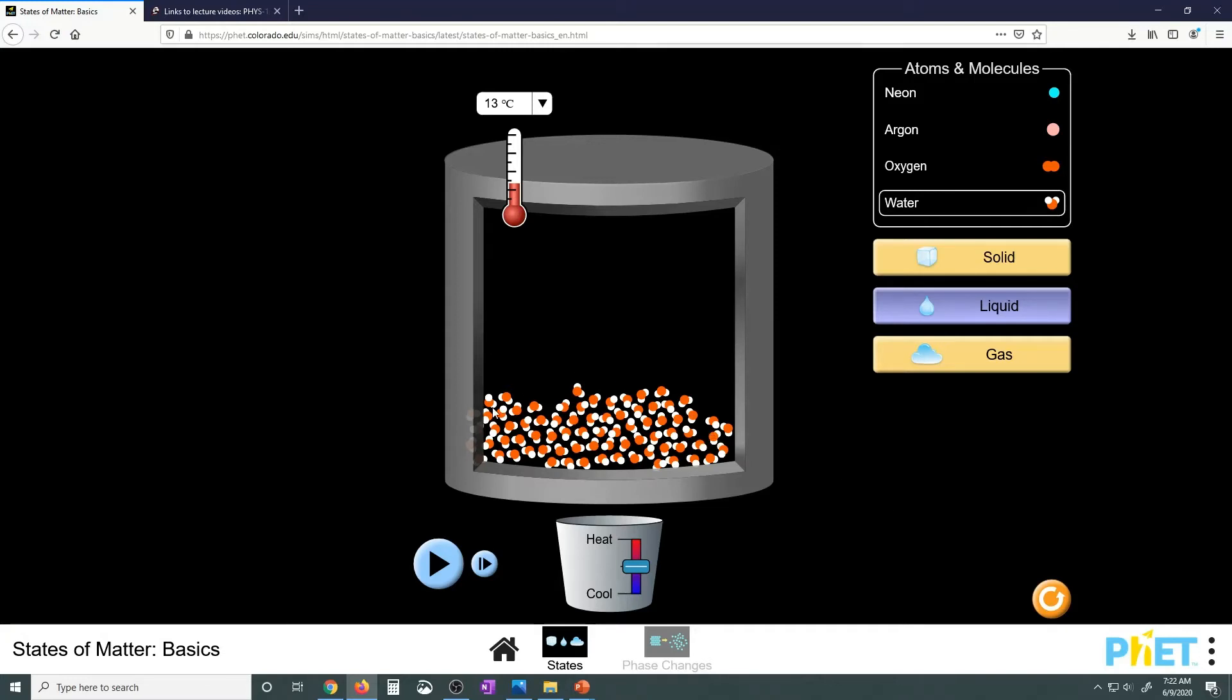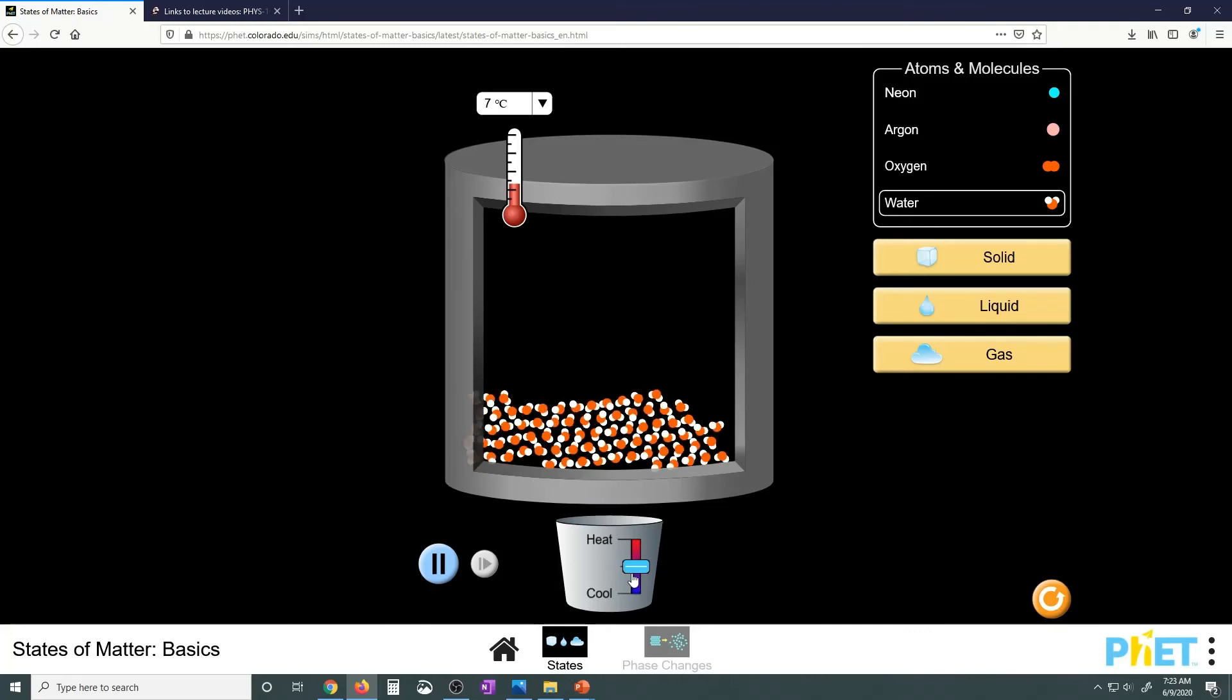This is the same simulation I showed you in video one, where I was trying to represent temperature as the average kinetic energy of the molecules. I'm looking at water again here, and if you look at the temperature, it's at 13 degrees Celsius, which means I'm above the freezing point, so I'm in the liquid phase. This time I want to watch the molecules as I get close to the freezing point to zero and then even below.